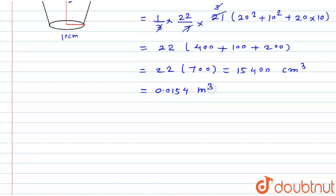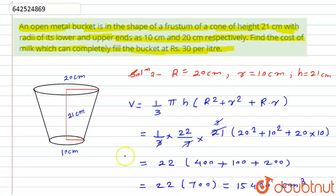In meter cube this will be 0.0154 meter cube. But if I will look at the rate now, what is it stated? To find the cost of milk which can completely fill the bucket and the rate is given per liter. So I have to convert this volume into per liter.